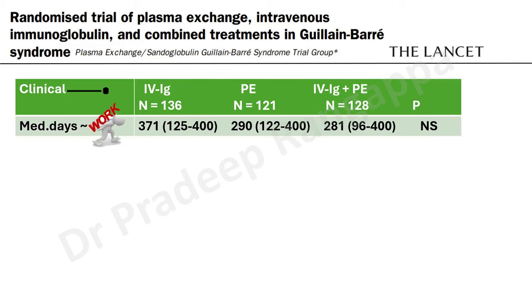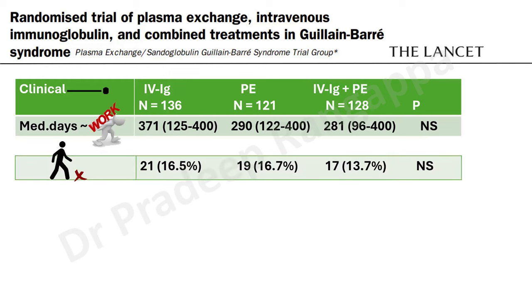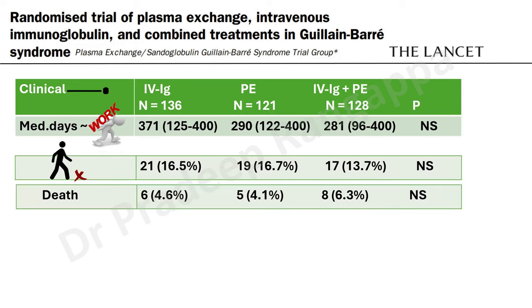The median days to resume normal work is also important — after someone has suffered from GBS, the median days to get back to their work is almost close to a year: 371 days, 290, and 281. So 10 to 12 months it takes to get back to normal work, with no difference between any of the three modalities. Certain groups of patients — up to 15% — cannot walk independently. And death occurred in around 5% of patients, with no difference between IVIG, plasma exchange, or combination.